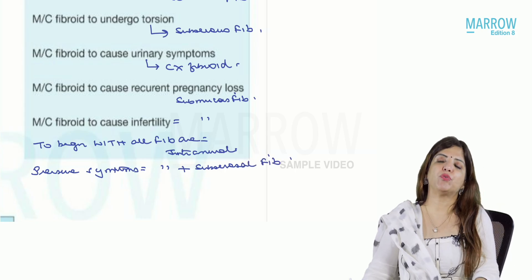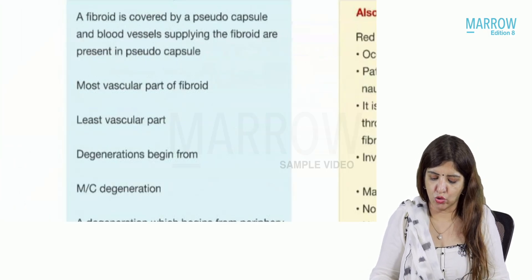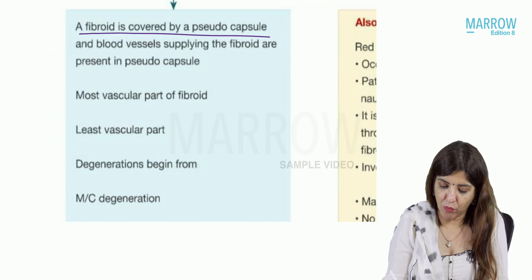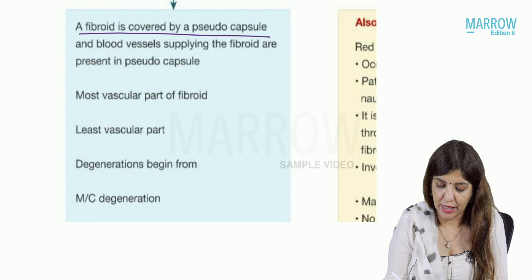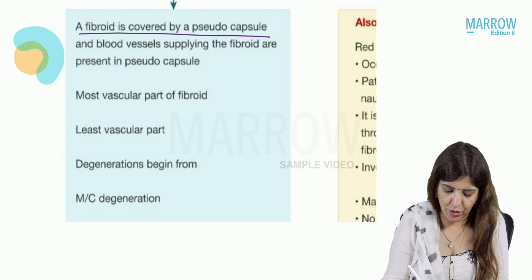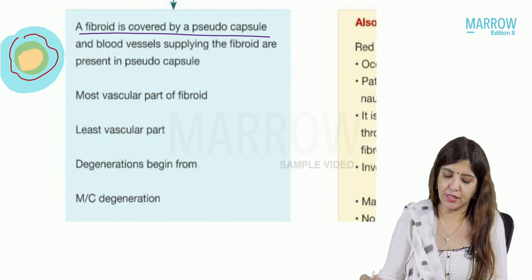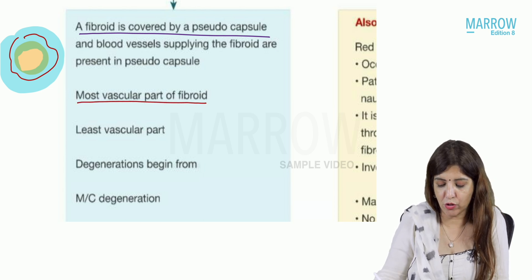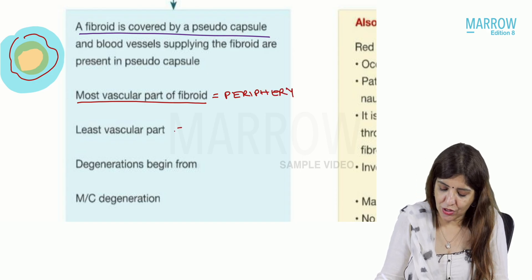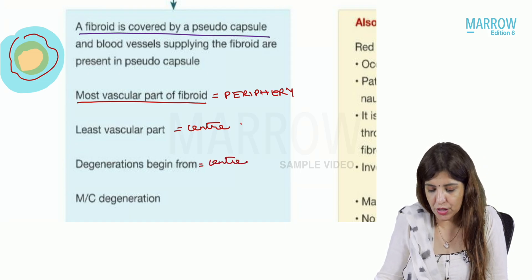Pressure symptoms are due to intramural plus subserous fibroids — submucous fibroid does not lead to pressure symptoms. A fibroid is covered by a pseudo capsule, and the blood vessels which supply the fibroid are present in this pseudo capsule. Therefore, the most vascular part of the fibroid is the periphery, whereas the least vascular part is the center of the fibroid.